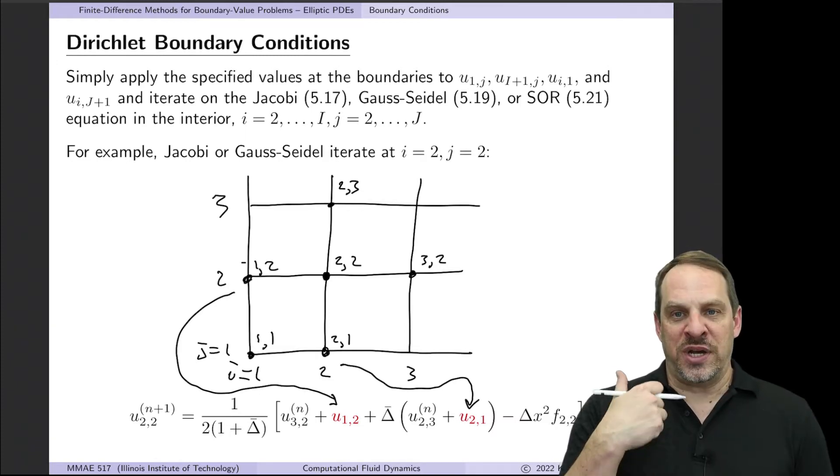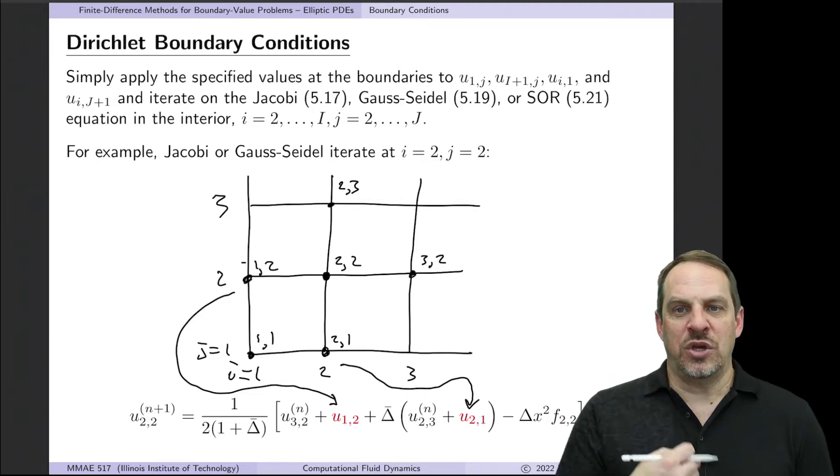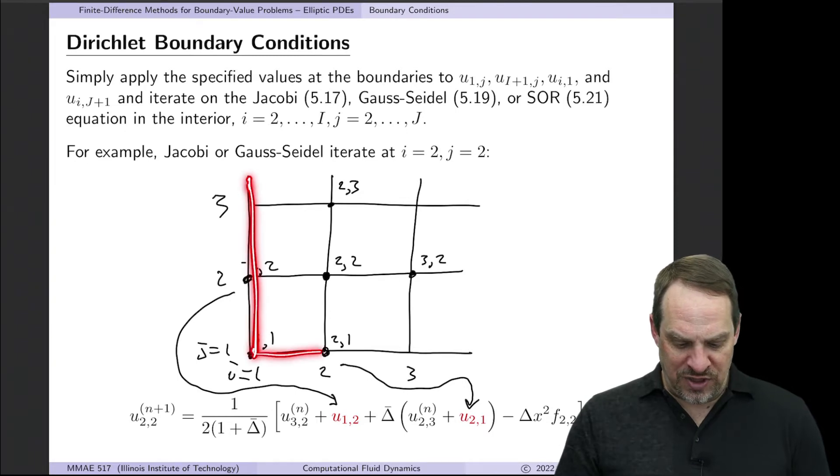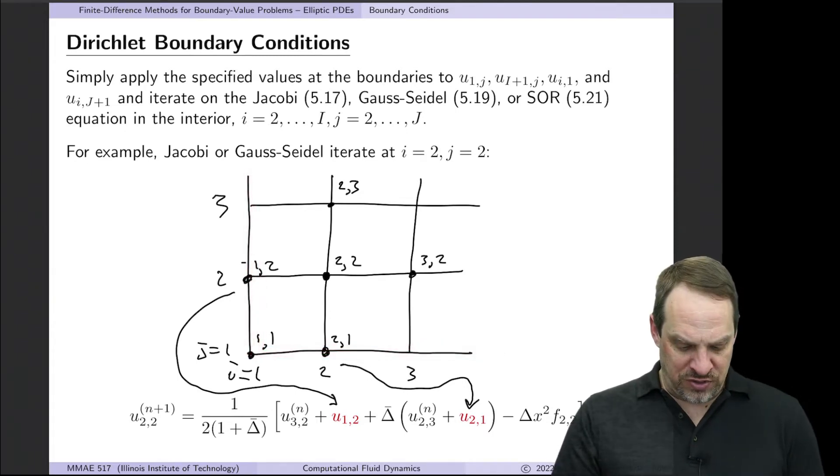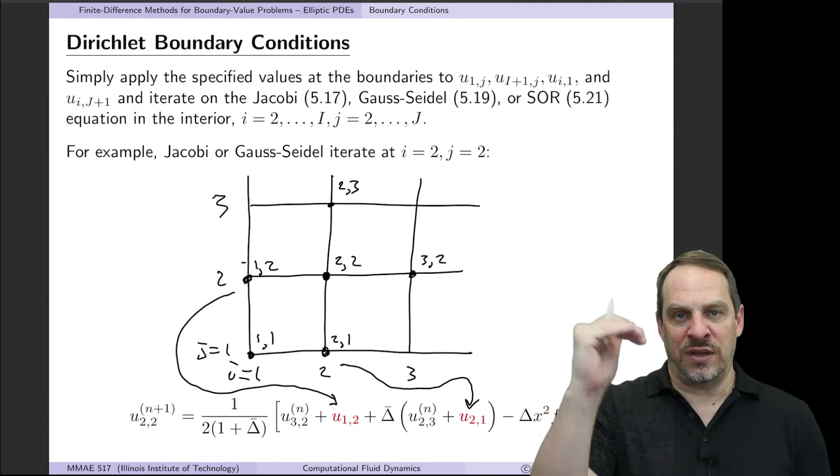Then you only need to apply your Jacobi, Gauss-Seidel, or SOR iteration process to the interior points of your domain. So here I've sketched the lower left-hand corner. Here's the 1,1 point, the lower left-hand corner, 2,1, 1,2, and so forth as you go through I in the X direction and J in the Y direction.